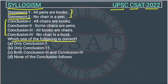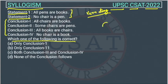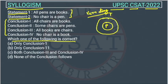We will solve these questions through Venn diagrams. So the first statement is: all pens are books. In the Venn diagram, the circle for pen is placed inside the circle for books.